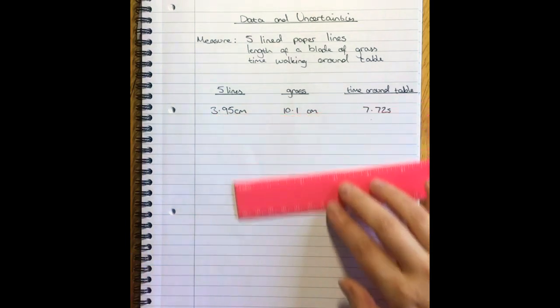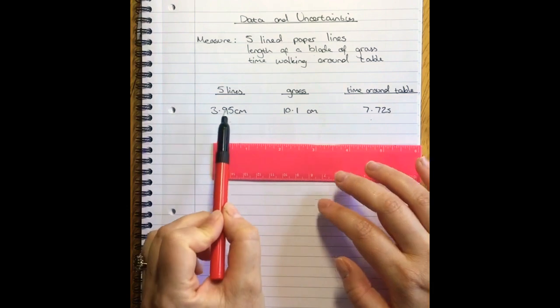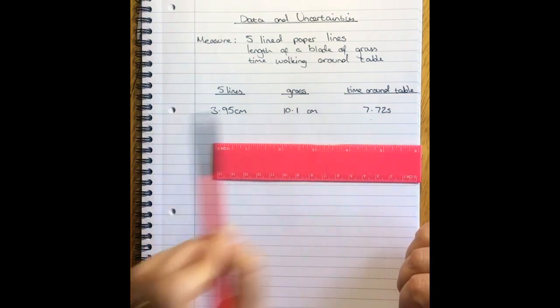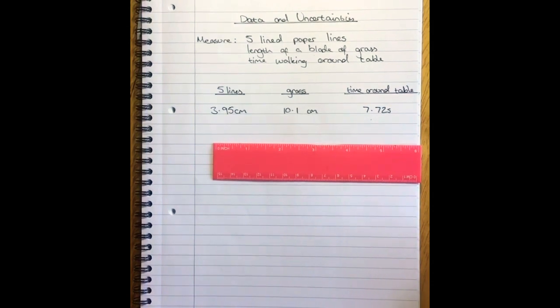Now you can see I've used the same measuring device for both measuring my five lines and measuring my blade of grass. Have I been as precise as I can be in both measurements?